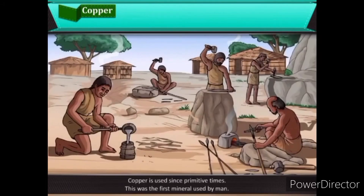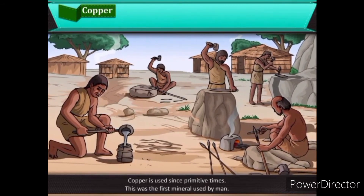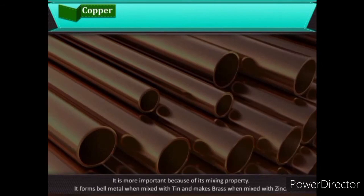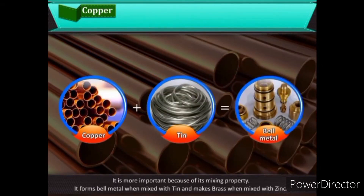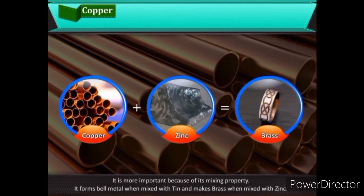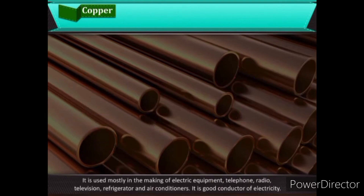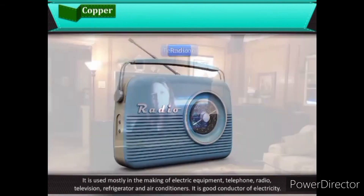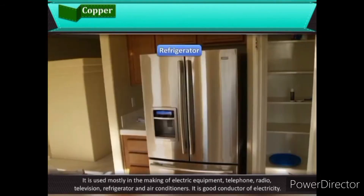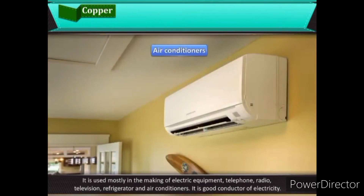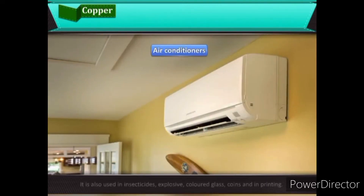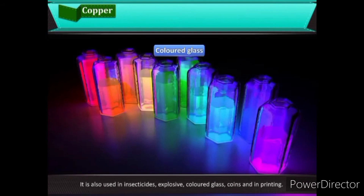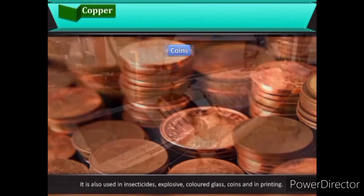Copper has been used since primitive times and was the first mineral used by man. It forms bell metal when mixed with tin and makes brass when mixed with zinc. It is mostly used in making electrical equipment such as telephone, radio, television, refrigerators, and air conditioners, as it is a good conductor of electricity. It is also used in insecticides, explosives, colored glass, coins, and printing.